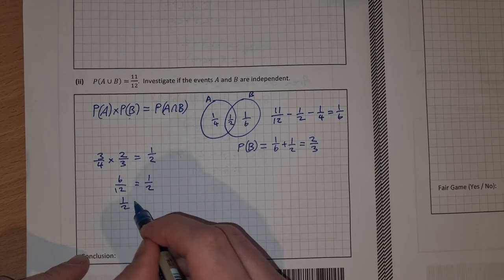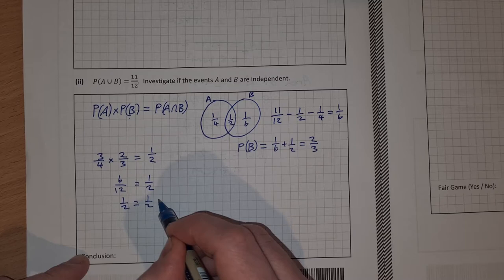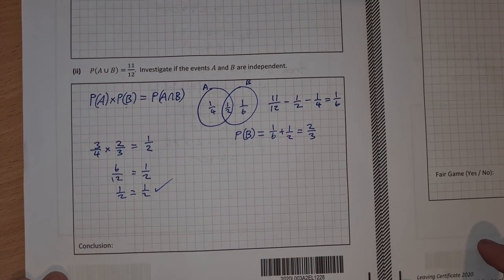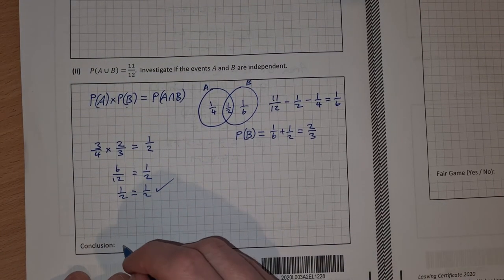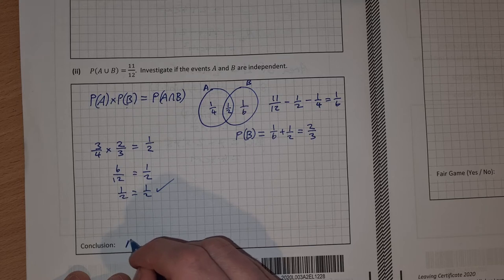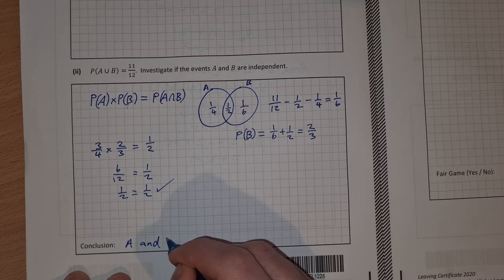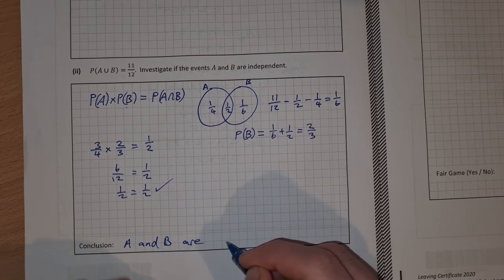So that is a half is equal to a half and that means that they are independent. So we can say that A and B are independent.